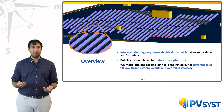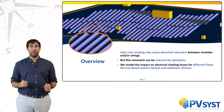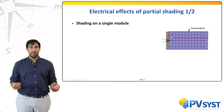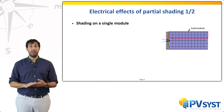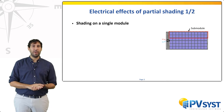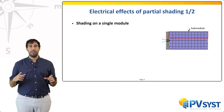Let us begin with the simplest case: the effect of shadings on a single module. The first observation is that whether one shades one cell or several cells within the same sub-module, the resulting IV curve will look roughly the same. Here, a sub-module is defined as a collection of cells in series protected by a bypass diode. This behavior is characteristic of components in series, as any current limitation will affect all components. Most of the modeling philosophy in PVSYST is therefore based on defining the fundamental unit of shading as a sub-module rather than the single cell.